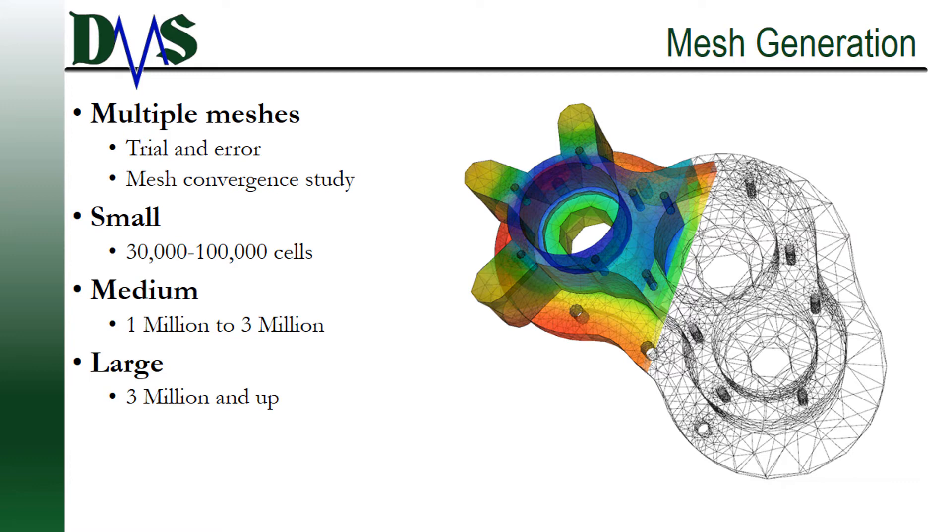You shouldn't expect that there's going to be just one mesh. You should expect that the engineer is going to generate multiple meshes. Getting the right mesh is partly a process of trial and error. Multiple meshes are also required as part of the quality control process to do a mesh convergence study.